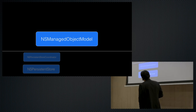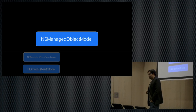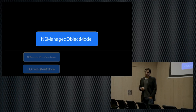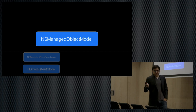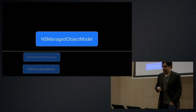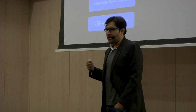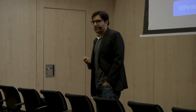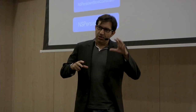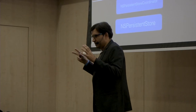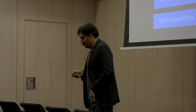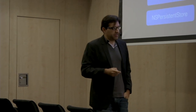Next is the NSManagedObjectModel. If you're familiar with databases, think of this as your schema — it describes what your data looks like, what entities there are, what properties they have, how each entity is related to each other, whether an entity has a super entity. The Managed Object Model also has pre-canned fetch requests and configurations. What's really nice is there's a visual modeler tool where you can see all the objects in your application and visualize the relationships and hierarchy.